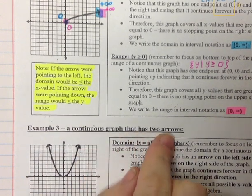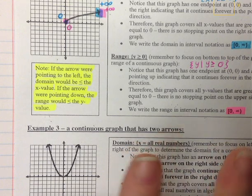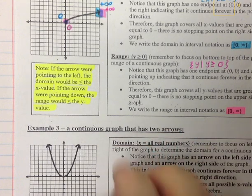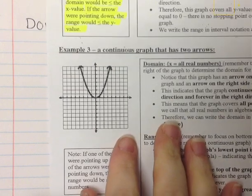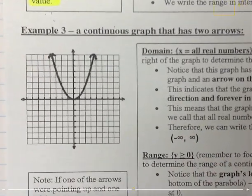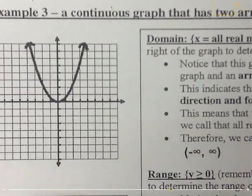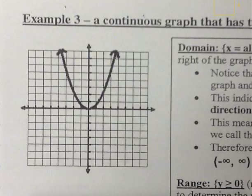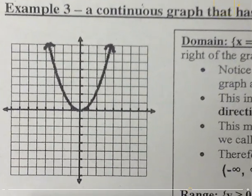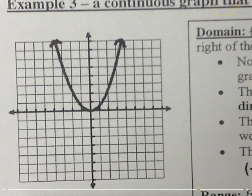So it doesn't have a true endpoint because it has two arrows on it. We're going to be using color coding for the domain and the range. I'm going to be using blue to help me with the domain and pink to help me with the range.